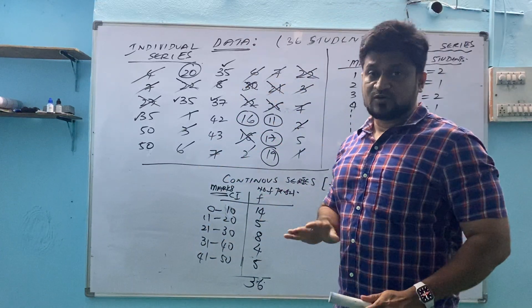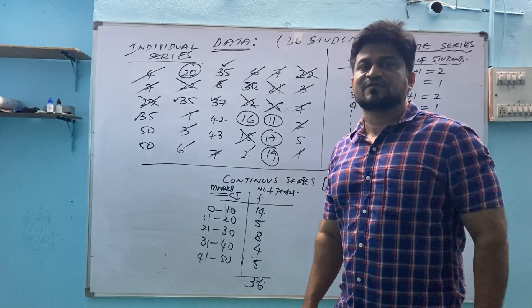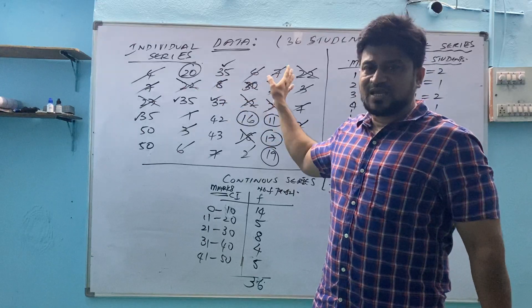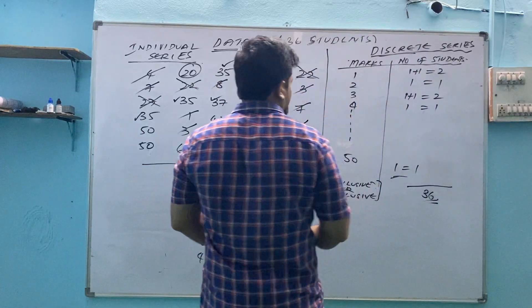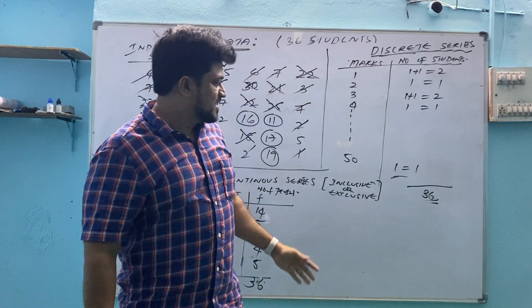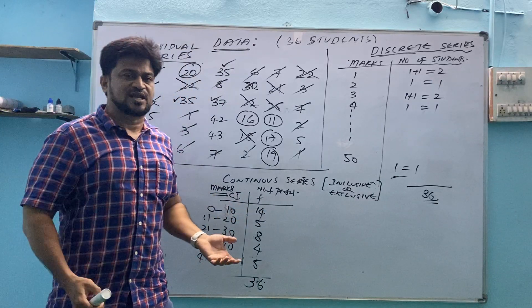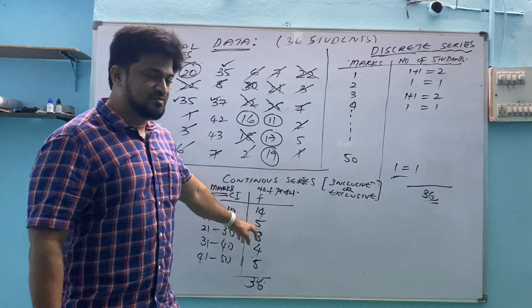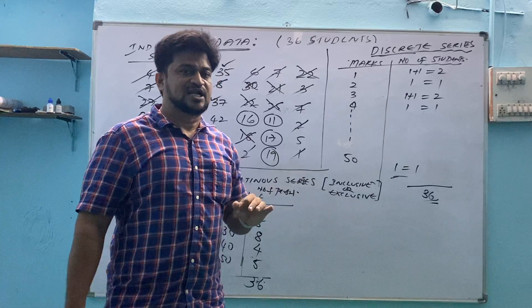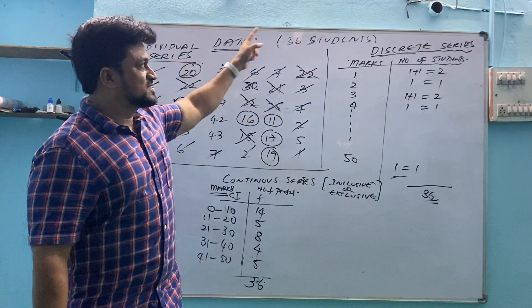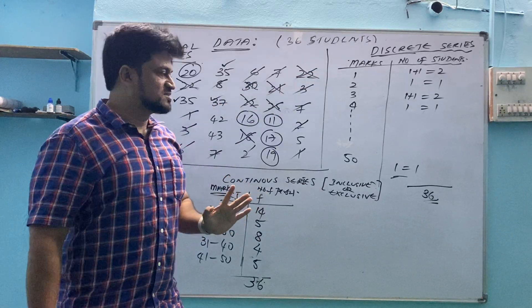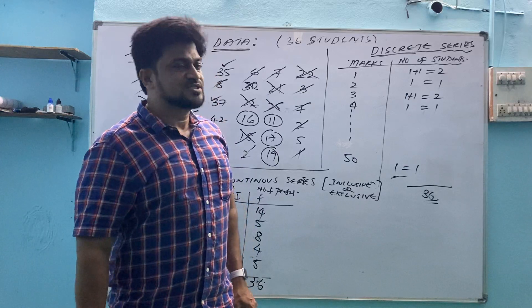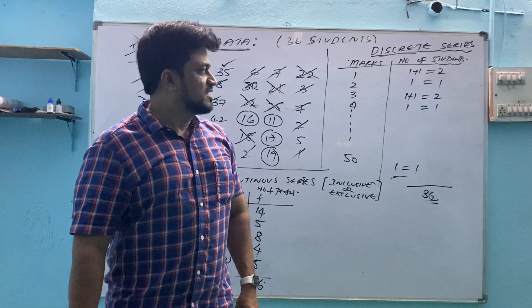So, consolidating: statistics data is divided into three types of series. Whatever information we collect will be in the form of Individual Series — without making any table, just writing name and data. Or we can make a table with marks and number of students — that is Discrete Series. Or we can group by range of marks — that is Continuous Series. Based on this, we are going to start the Introduction to Statistics unit, beginning with the definition.